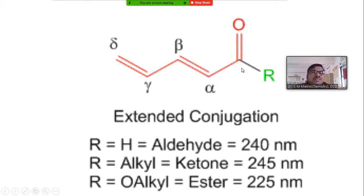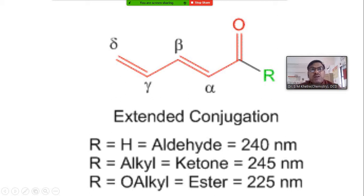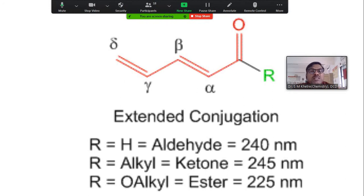Whatever carbonyl group we have, no doubt this carbonyl group is going to have alternating double bonds. You consider the first double bond: double bond between carbon and oxygen, then carbon-carbon single bond, then carbon-carbon double bond. So carbon-oxygen double bond and carbon-carbon double bond — both double bonds are in conjugation. This is the prior condition to have the enone system, because if the double bonds are not in conjugated fashion, it is very difficult to calculate the lambda max of the enone system.